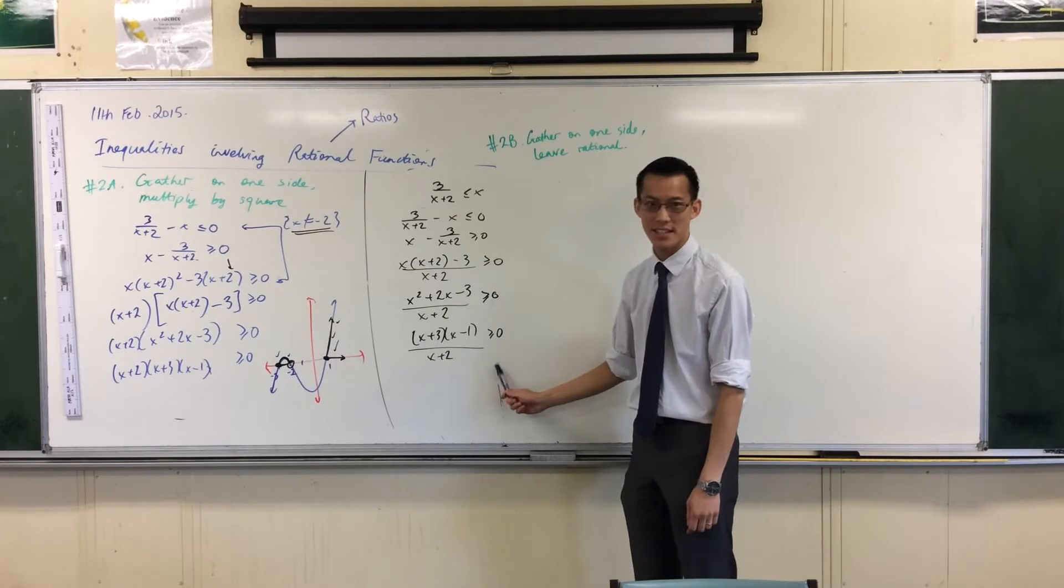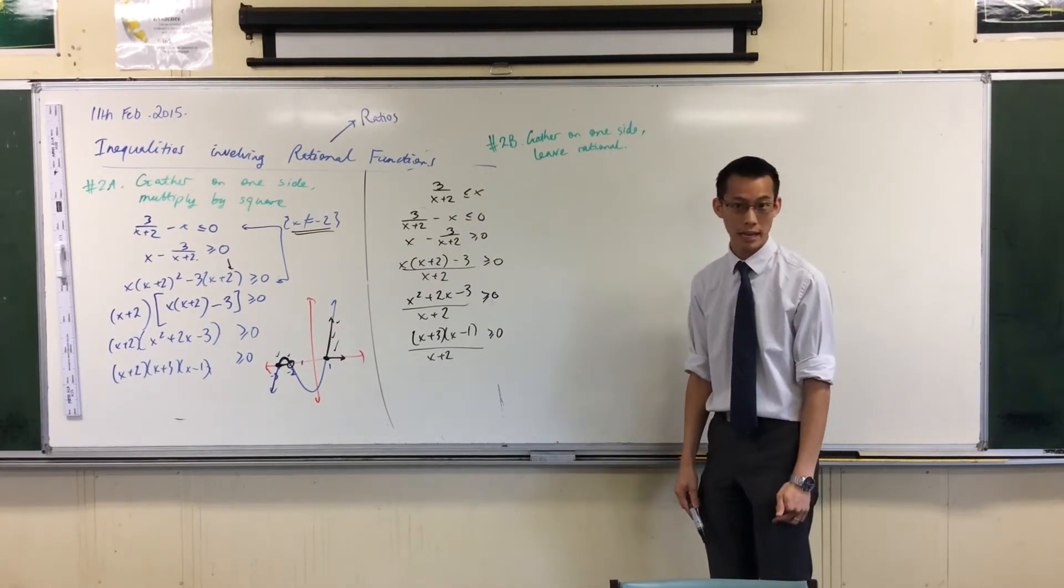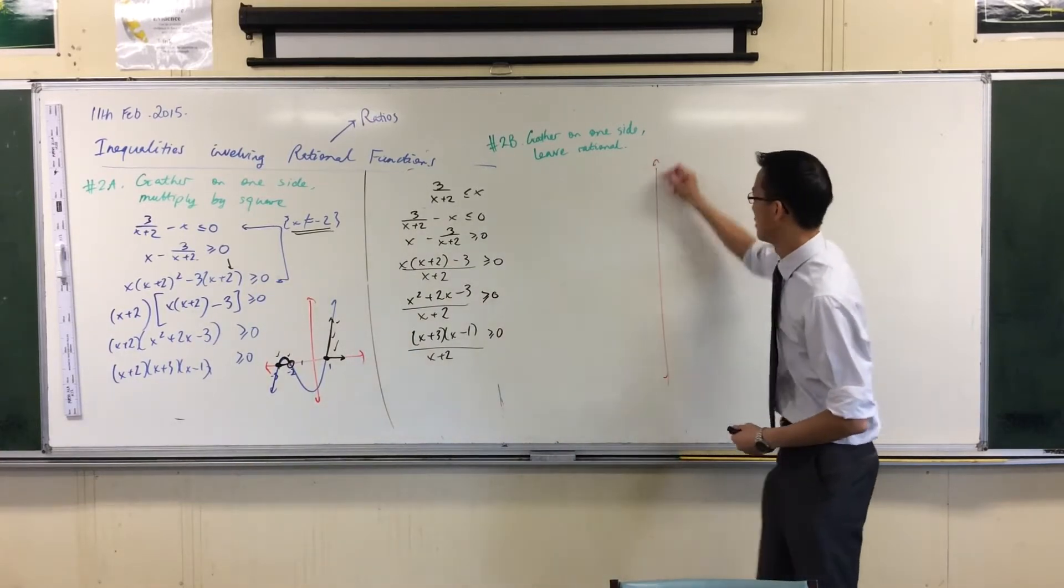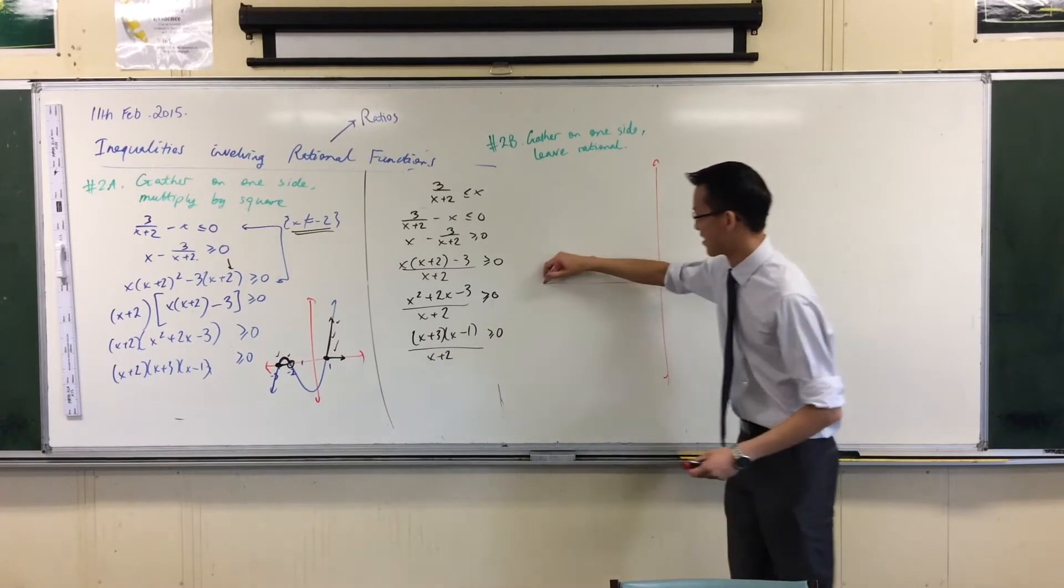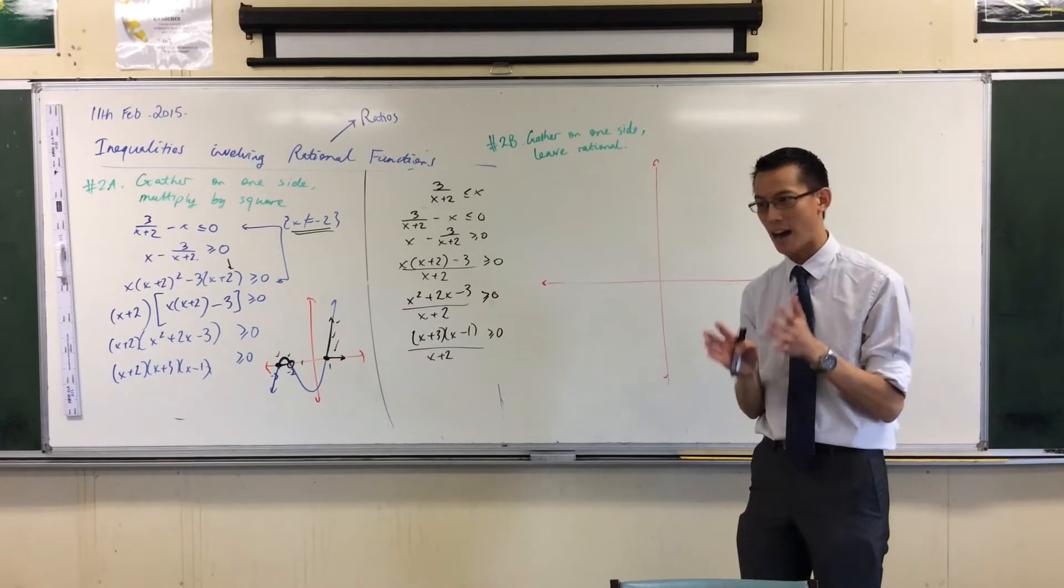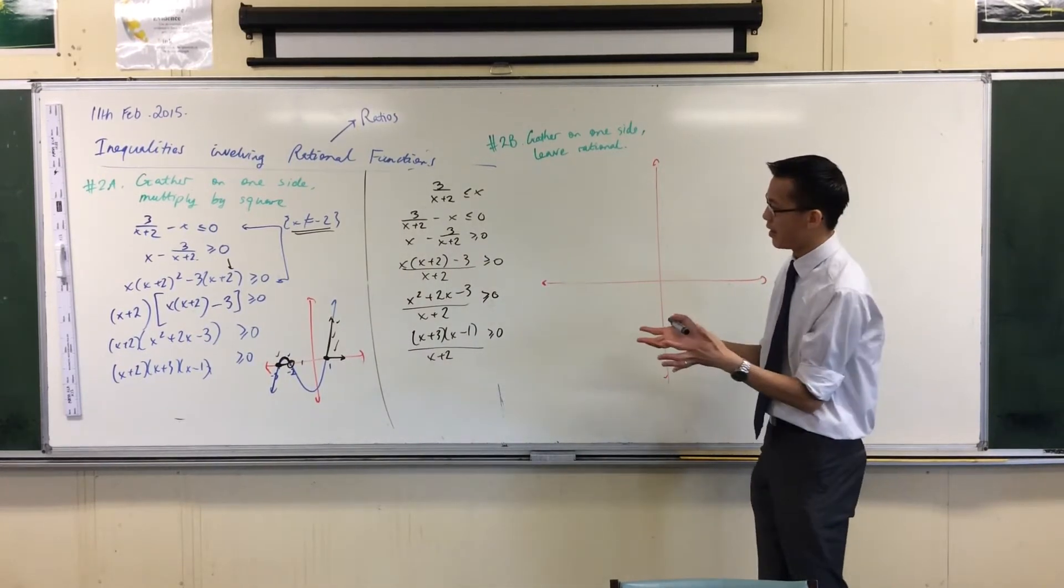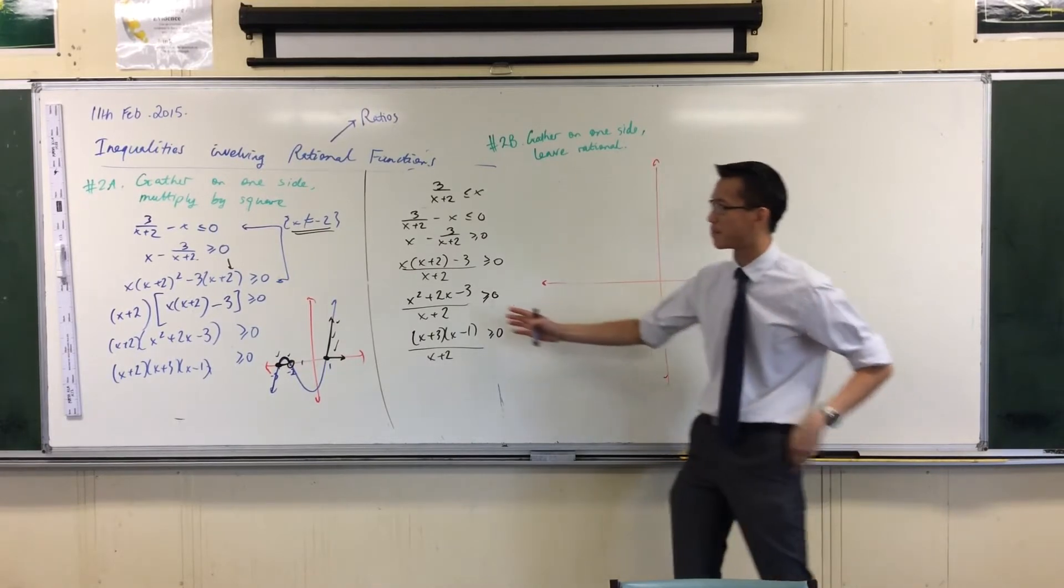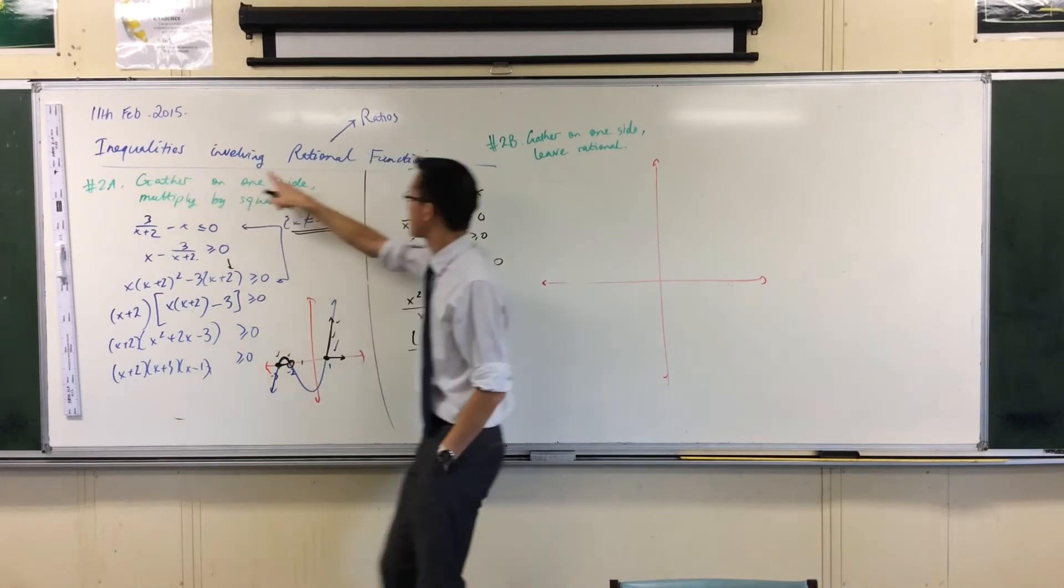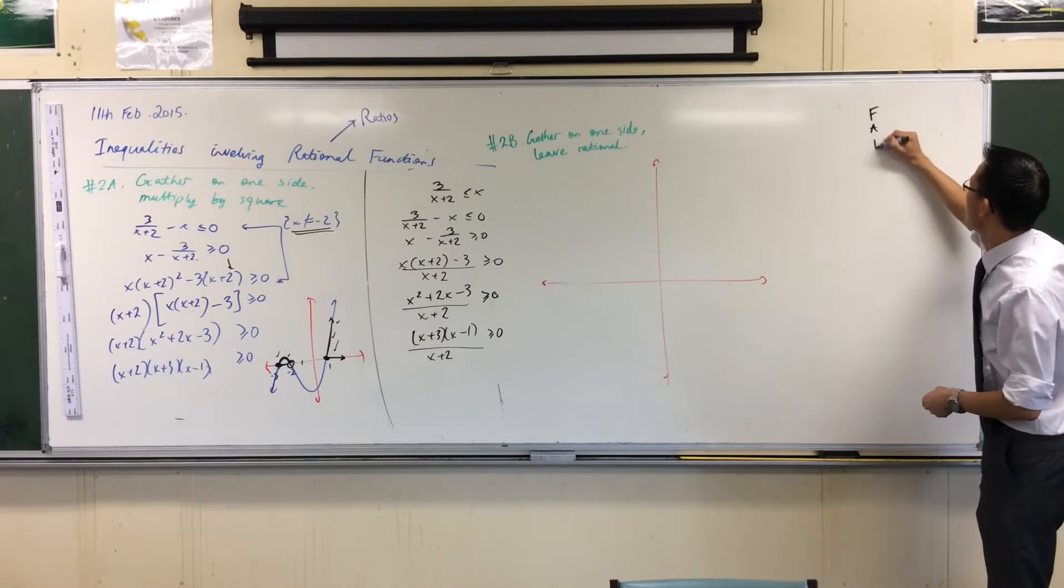Then the question becomes, what does this thing look like? When is it greater than or equal to zero? It's still a hyperbola, but it's a bit of a funky hyperbola. I'm going to give you a bit of an approach for how to graph rational functions in general. It's a bit of a longer explanation and sort of peripheral to inequalities. This is the main focus, but I'm digressing because you will see these.